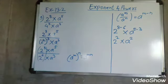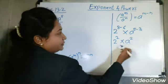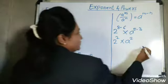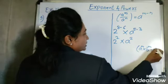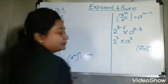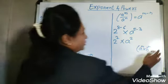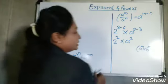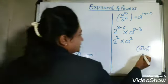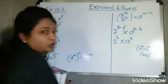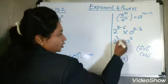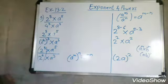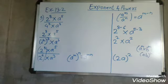We simplify further. Now the exponents are same and bases are different, so we use the formula: A raised to M into B raised to M is equal to AB whole raised to M. Multiply the bases: 2 into A is 2A, with the common exponent 2. So the final answer is 2A raised to 2, or 2A square.